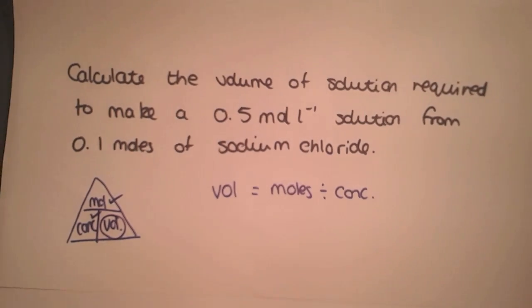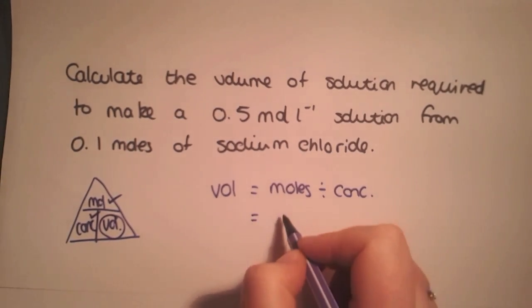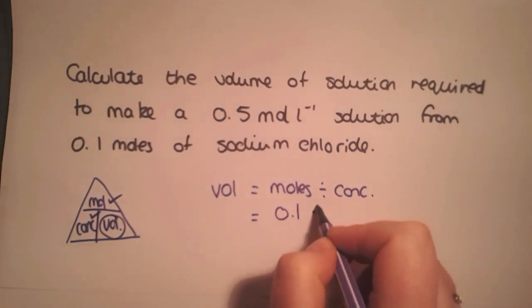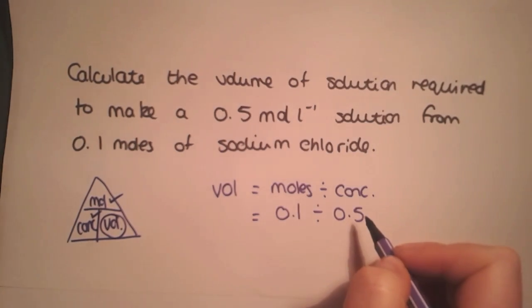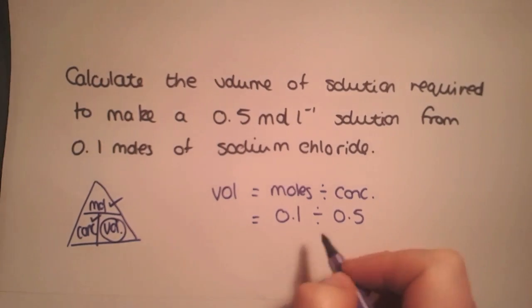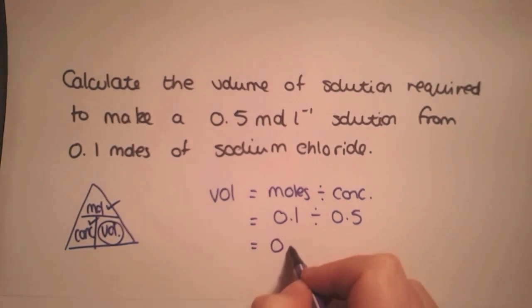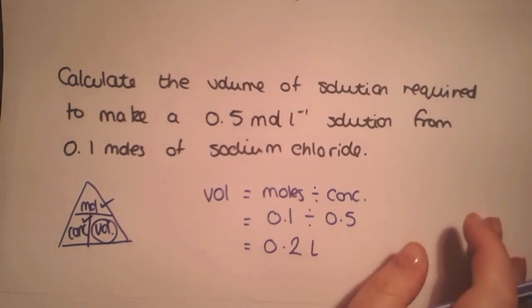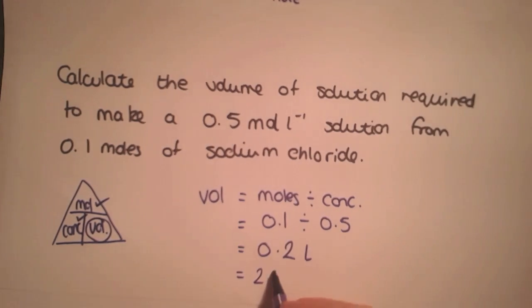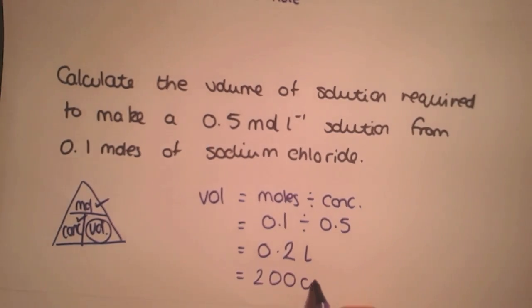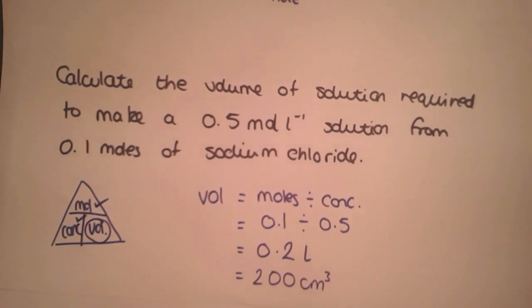So the moles, 0.1 divided by 0.5 gives us a volume of 0.2 litres. Now often you might want this to be in centimetres cubed as it's easier to work with. So you would multiply by a thousand to give you 200 centimetres cubed.